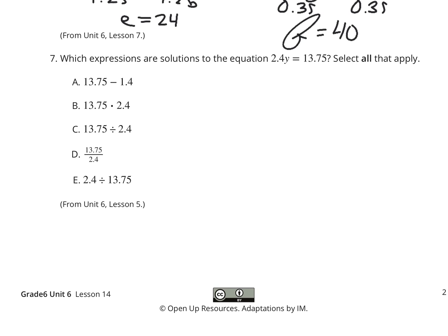Which expressions are solutions to the equation 2 in 4 tenths Y equals 13 in 75 hundredths? Select all that apply. Well, how would you solve this? You would divide both sides by 2 in 4 tenths. And so anything here going 13 in 75 hundredths divided by 2 in 4 tenths? Sure. There's C. There's D representing that division in the correct order. We're not subtracting. We're not multiplying by that. And we're not dividing 2 in 4 tenths by 13 in 75 hundredths. So, that's it.